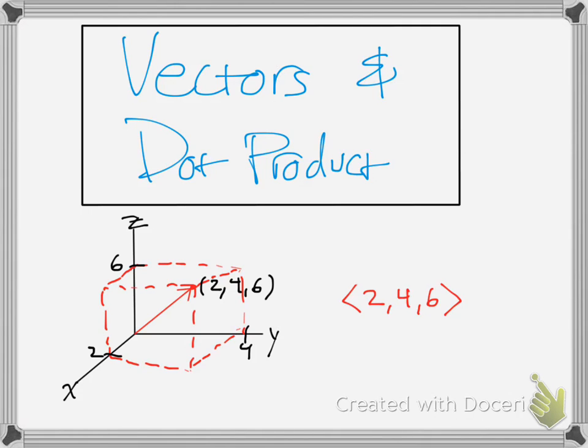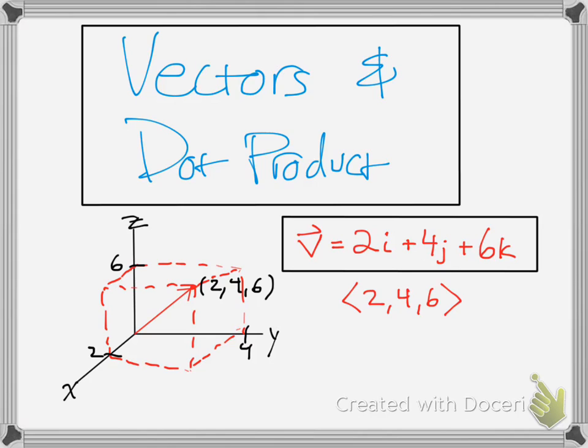And if you wanted to express it as a vector, you would put these kind of brackets around it instead of parentheses. Instead of expressing a point, you're expressing a vector. And that can be written as vector v, if you call that vector v, is 2i plus 4j plus 6k.